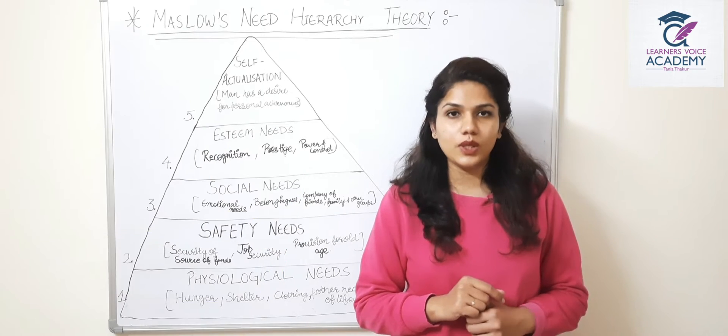The next is safety needs. Safety needs include security of funds, job security, and provision for old age. When organizations give employees job security, they feel secure. For example, government organizations offer pension plans. Employees know their job is secure, and when they get older they will receive a pension and be financially stable.